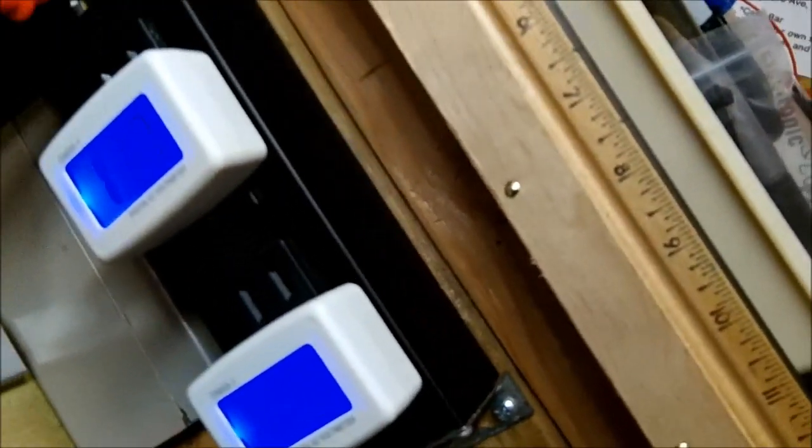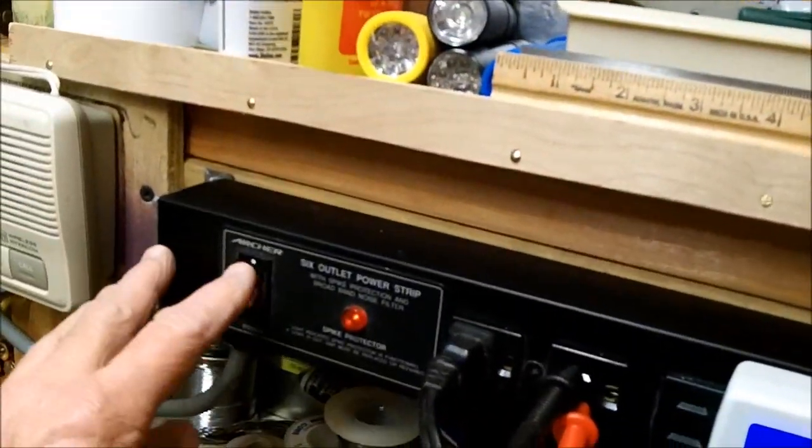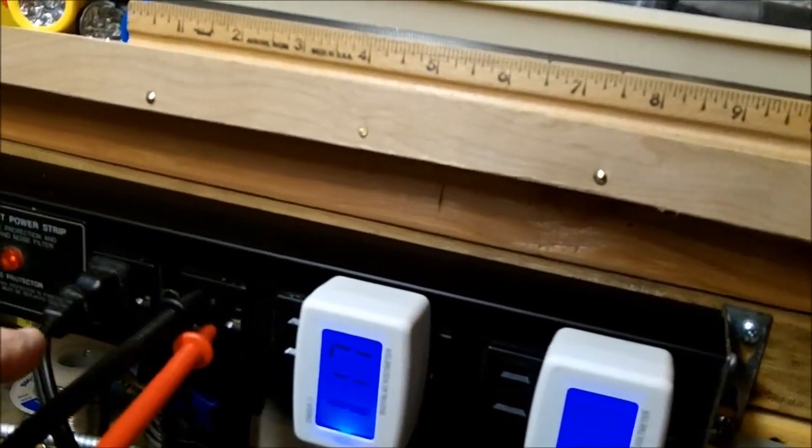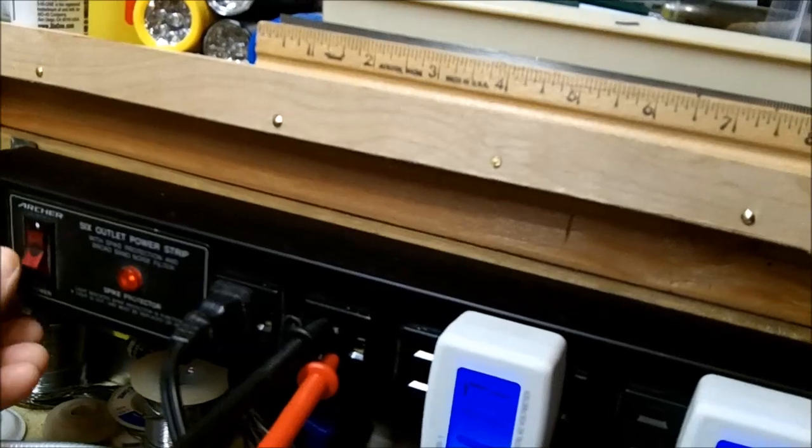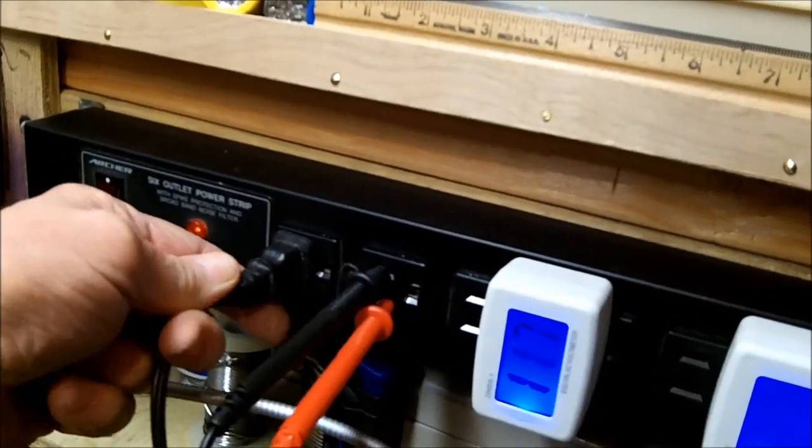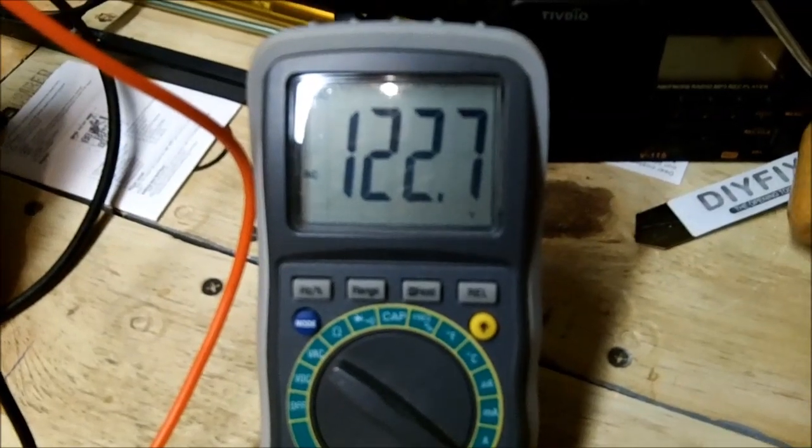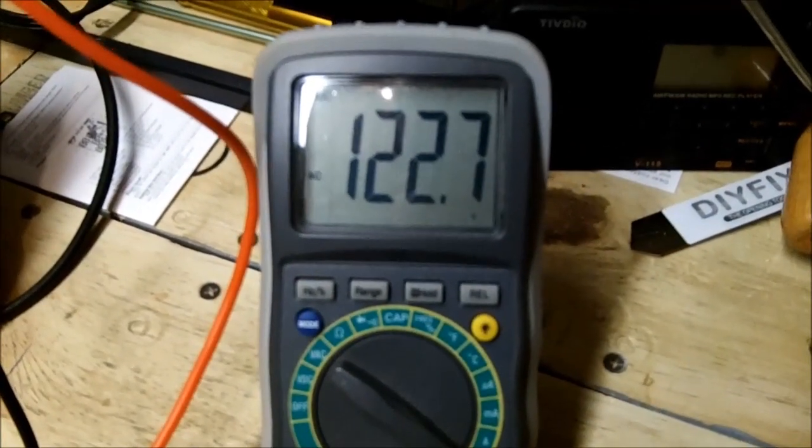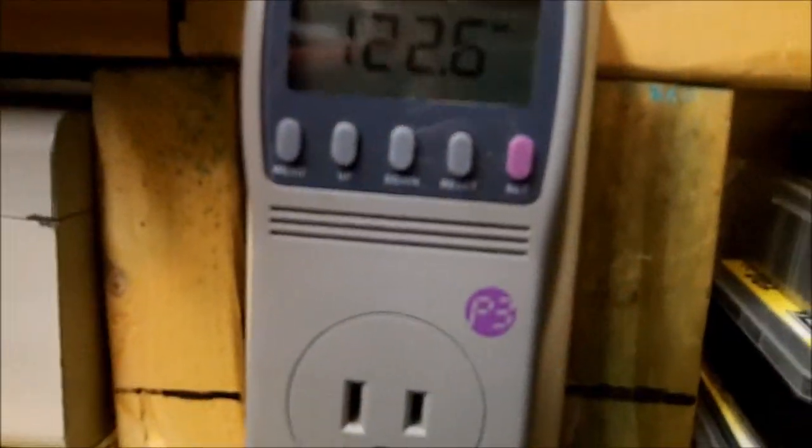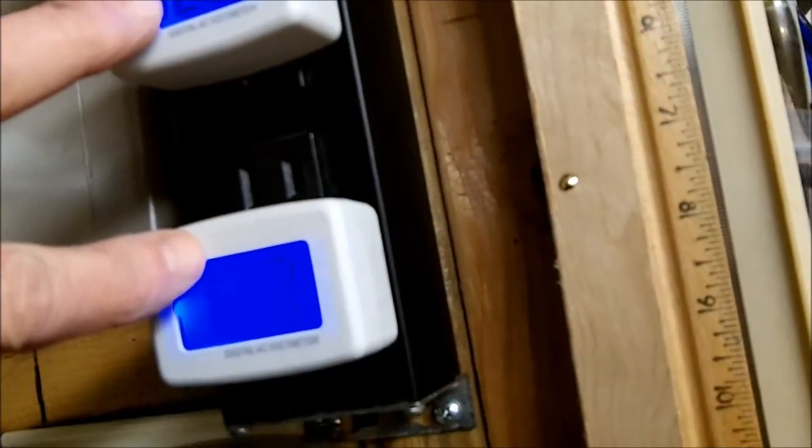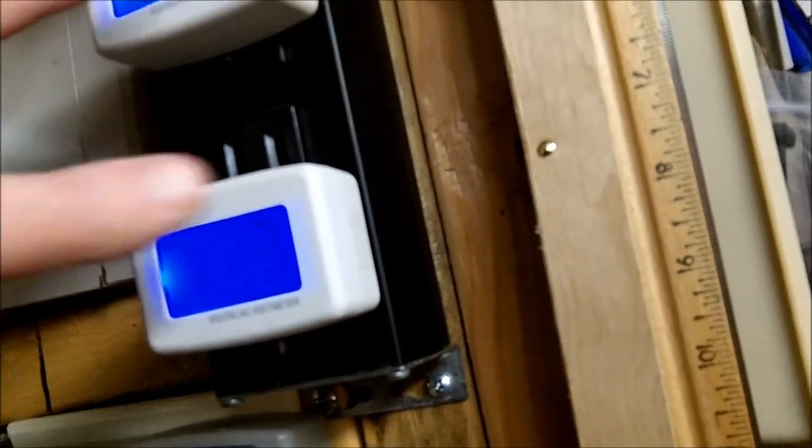Now watch what happens when I unplug the meter. First of all, this outlet strip is all one continuous circuit. Let me unplug the heater which is plugged in right here. The heater is unplugged. Note the reading across the voltage goes up to 122.7, that's understandable. 122.6 on the kilowatt, 123, 123. 122.6 and 123, that's fine.